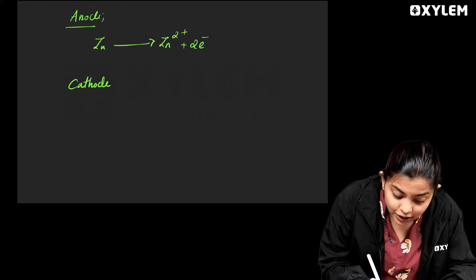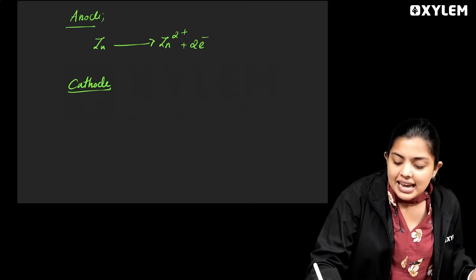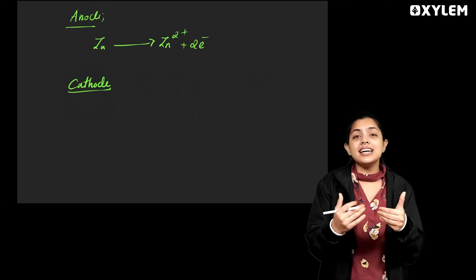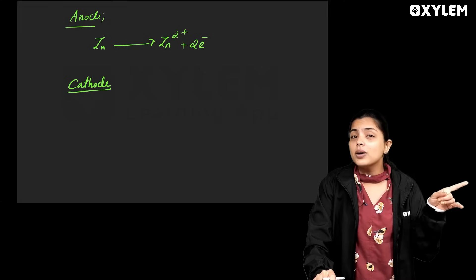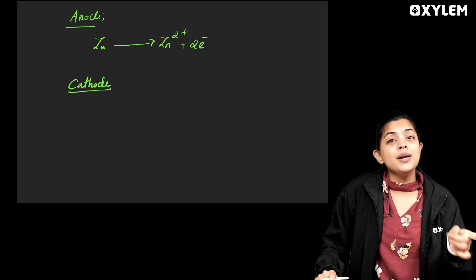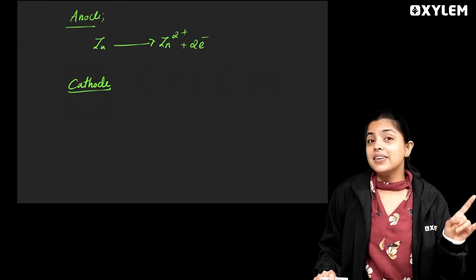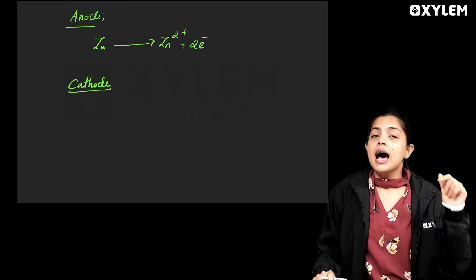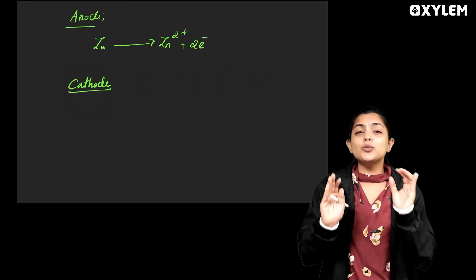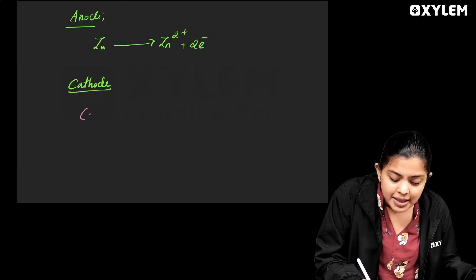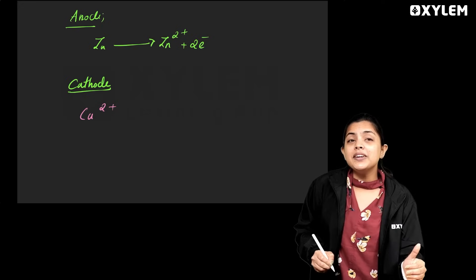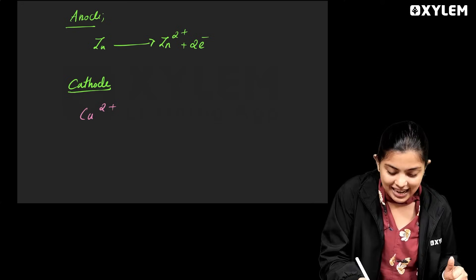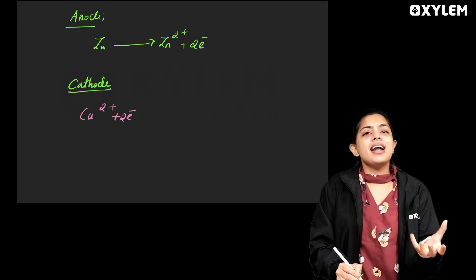This is the cathode with reduction. The cathode means reduction is the gain of electrons. So that means there are copper ions. If we have copper ions and two electrons, we get a copper ion — that's the reduction of the copper ion.